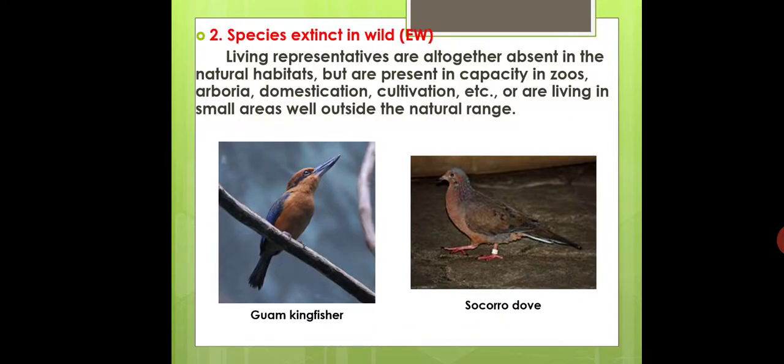The second category is Species Extinct in Wild, abbreviated as EW. Living representatives are altogether absent in natural habitats. Many organisms are not completely extinct but are present in captivity — in zoos, arboreta, domestication, cultivation — and living in small areas well outside the natural range. That is why they are not completely extinct.